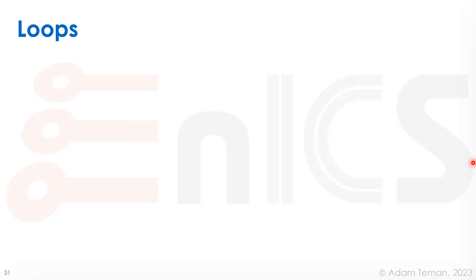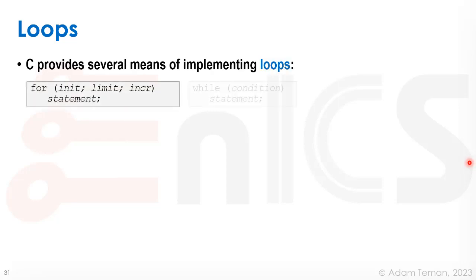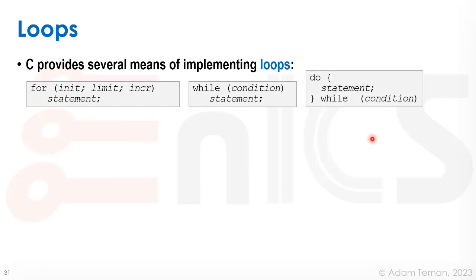So what we saw in the previous slide was our first type of conditional or use of go to or use of branching in order to implement an if-else type of construct. But the other type of construct that is very useful in coding is a loop. So C actually provides several means of implementing loops.